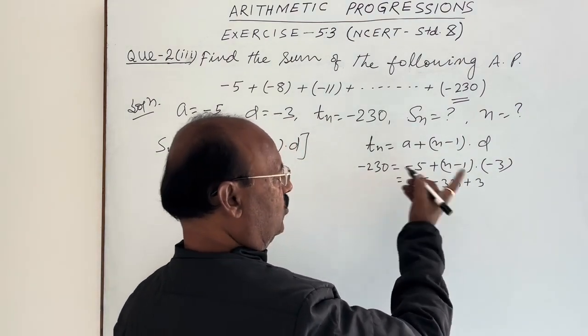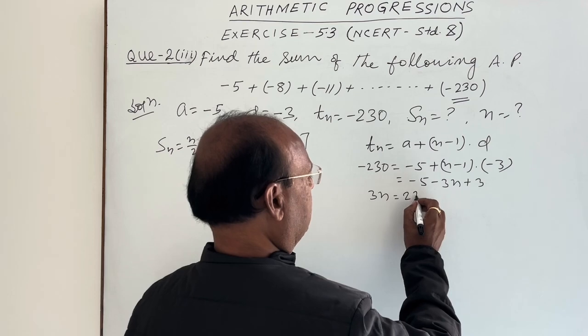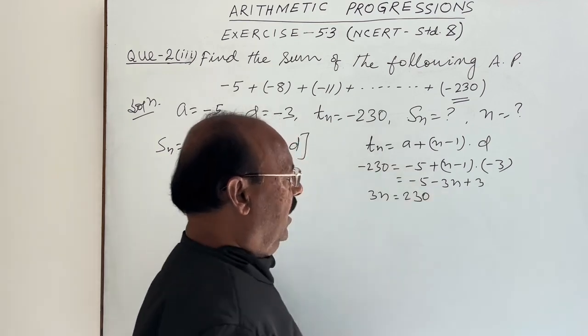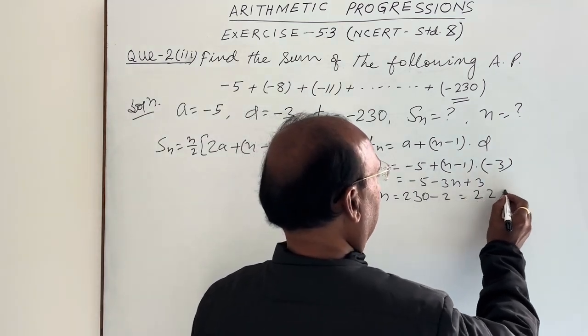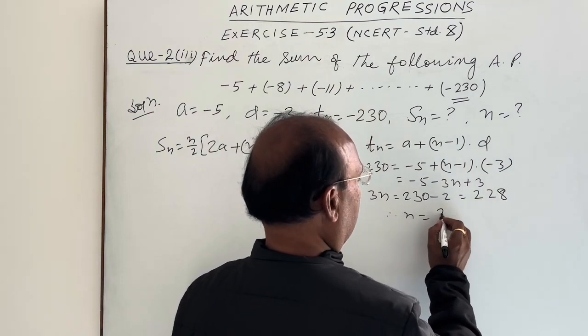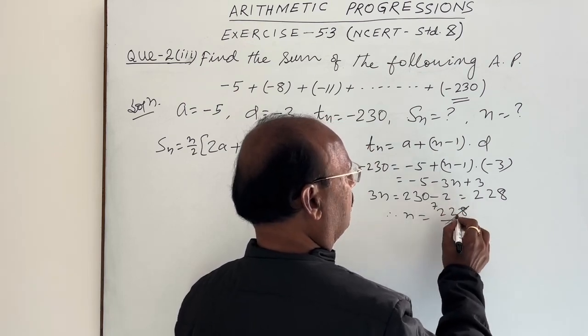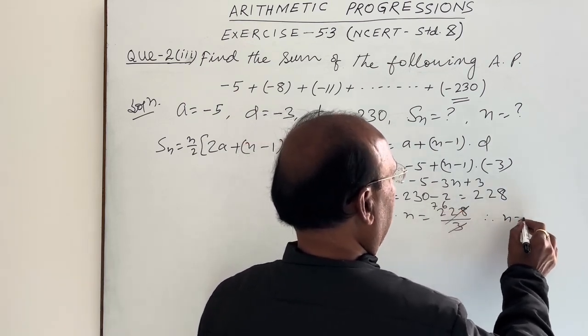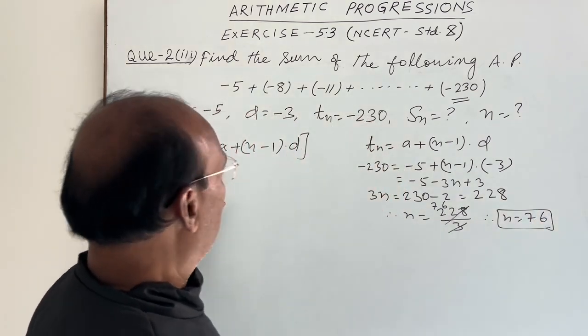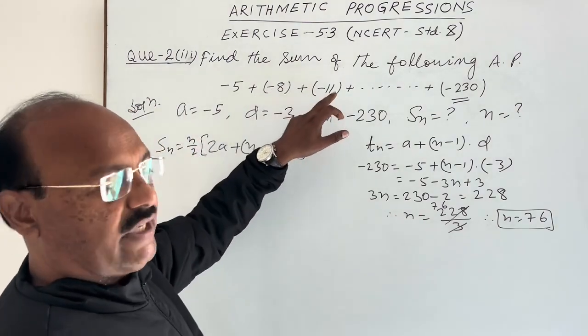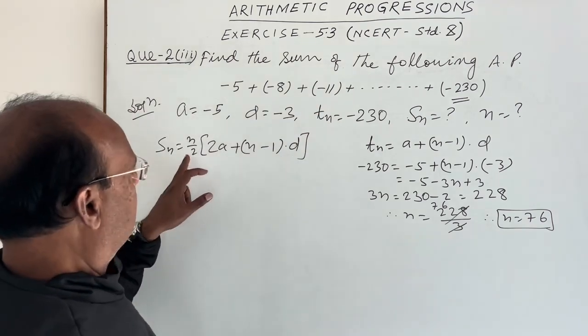You transpose minus 3N to left hand side, so 3N is equal to, 230 will transpose to right hand side, so 230 and this is minus 5 plus 3, that is minus 2. So this is equal to 228. Therefore N is equal to 228 divided by 3. So value of N is equal to 76. Now we can use this formula for finding the required sum of this AP.